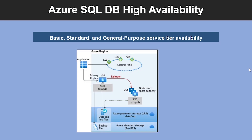Now let's look into high availability in Azure SQL Database. There are two high availability architecture models: the Standard availability model, which is based on a separation of compute and storage, and the Premium availability model, which is based on a cluster of database engine processes. The Basic, Standard, and General Purpose service tiers leverage the standard availability architecture for both serverless and provisioned compute — illustrated by a diagram showing four nodes with separated compute and storage layers.